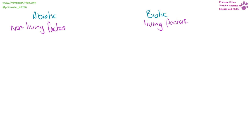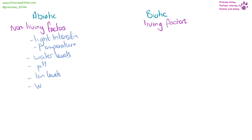Abiotic and biotic factors are things that are going to affect any organism. Abiotic factors are non-living factors such as light intensity, temperature, water levels, pH, iron levels, wind, carbon dioxide levels, and oxygen levels.